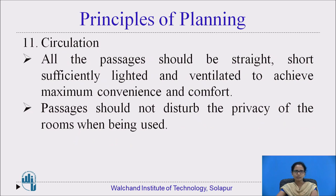Next is circulation, which is an important factor. All passages should be straight, short, sufficiently lighted, and ventilated to achieve maximum convenience and comfort. The passages should not disturb the privacy of the rooms when being used. There are two types of circulation: horizontal circulation, which includes passages leading to other rooms, and vertical circulation, which includes staircases, ramps, escalators, etc.